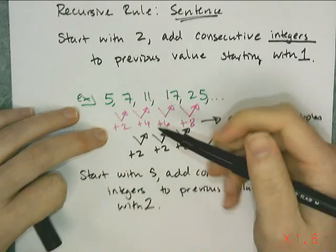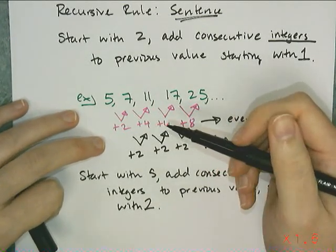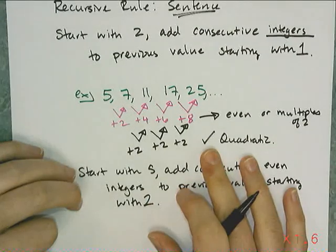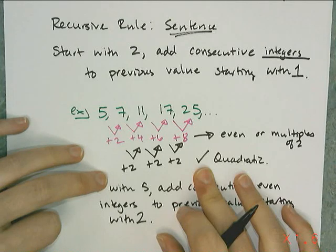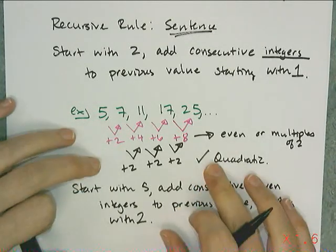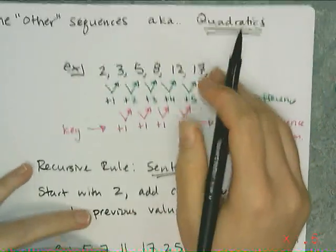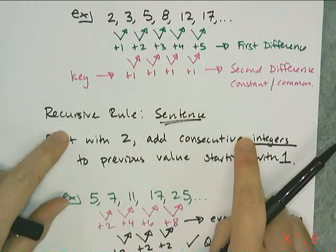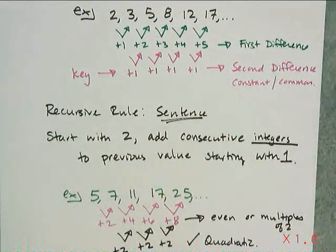In the activity in class, I think some of them started with 6 or 4. And that's what you would change here. So that's all I expect from you in terms of recursive sequence, or in terms of the quadratic sequences. Identify as quadratic. Give me the recursive rule as a sentence.